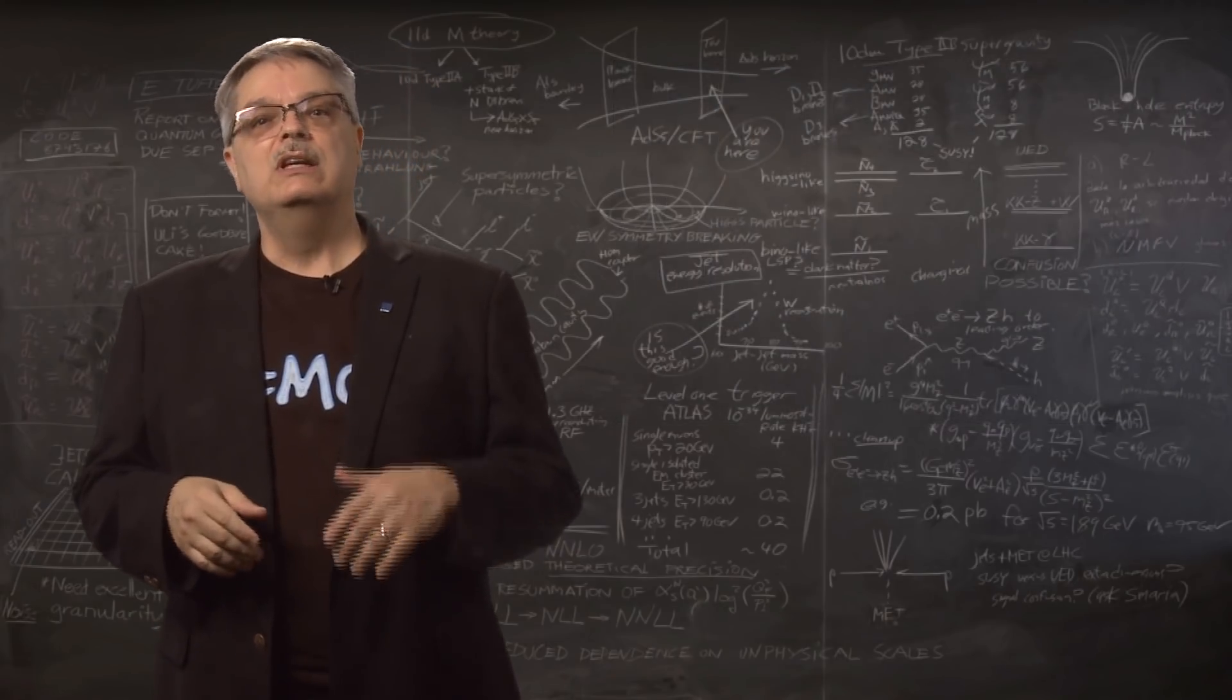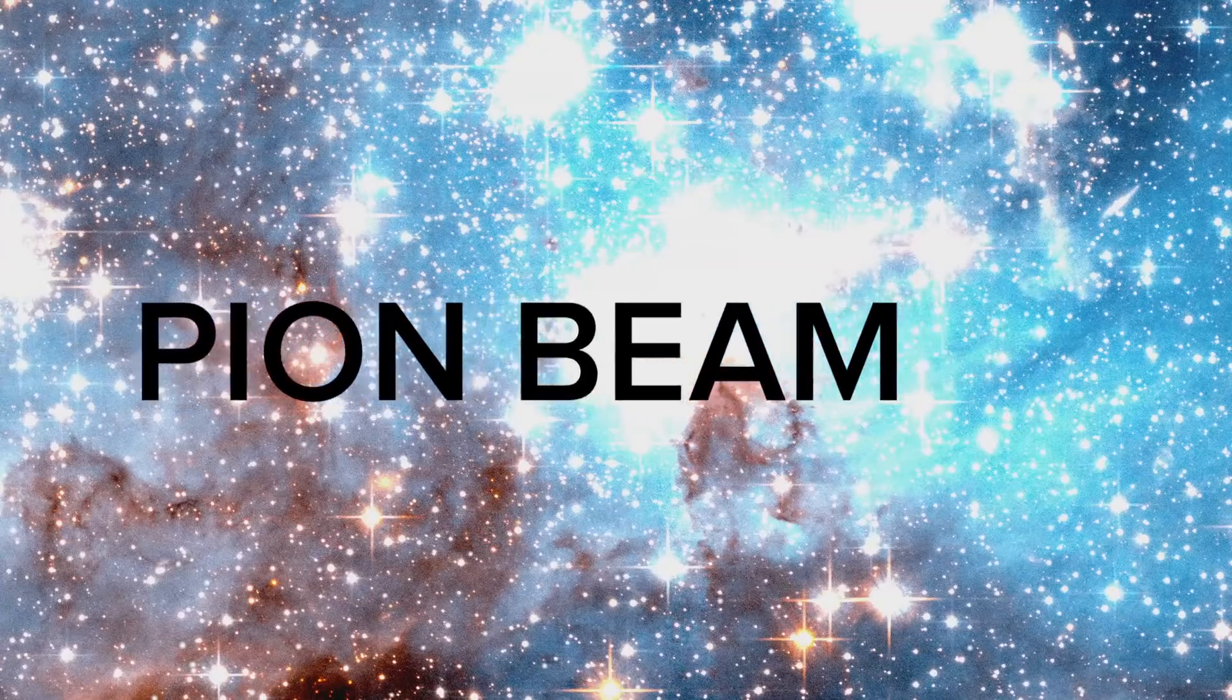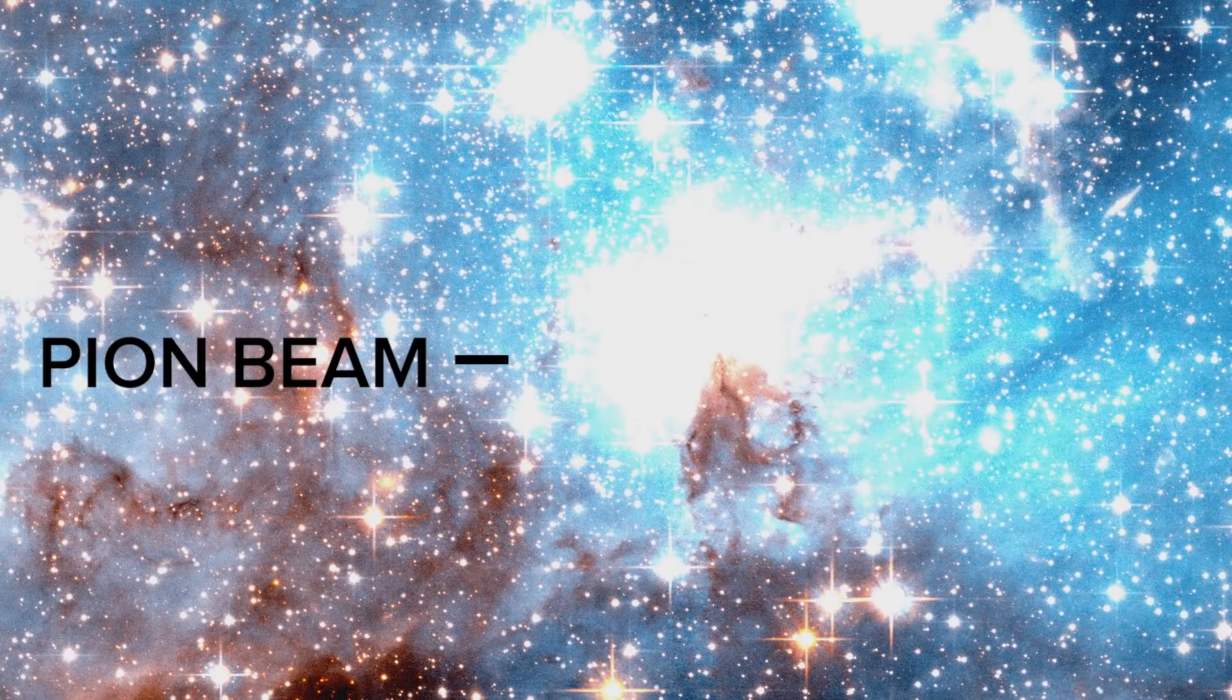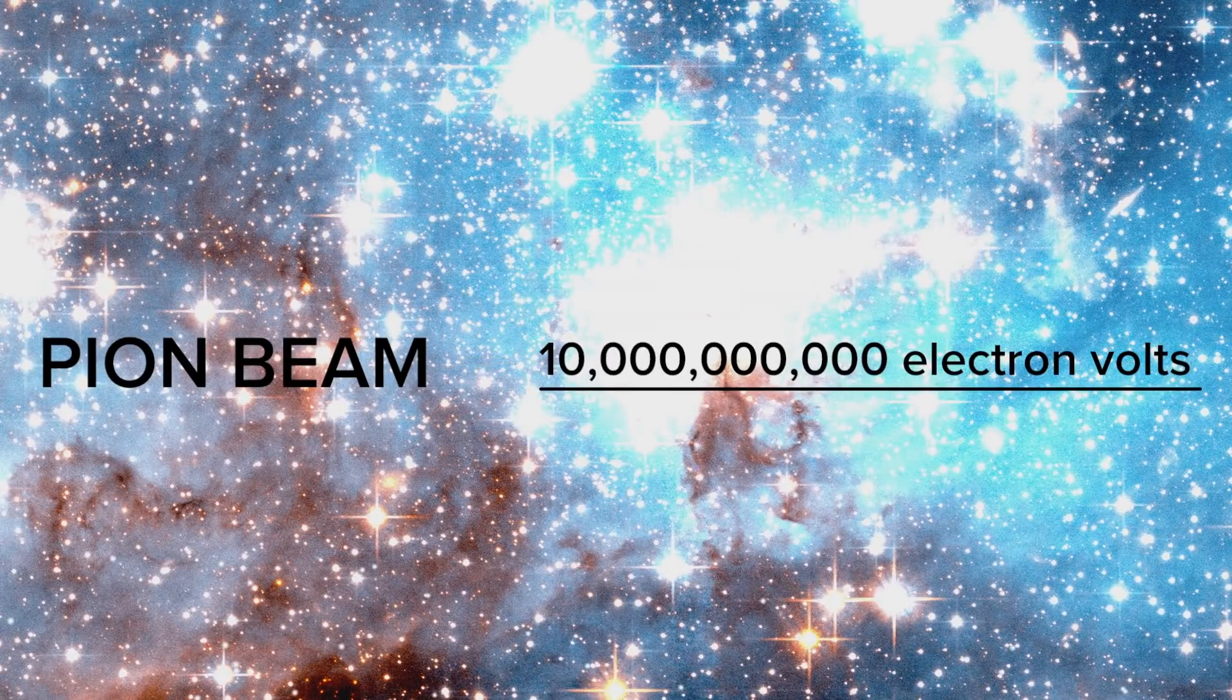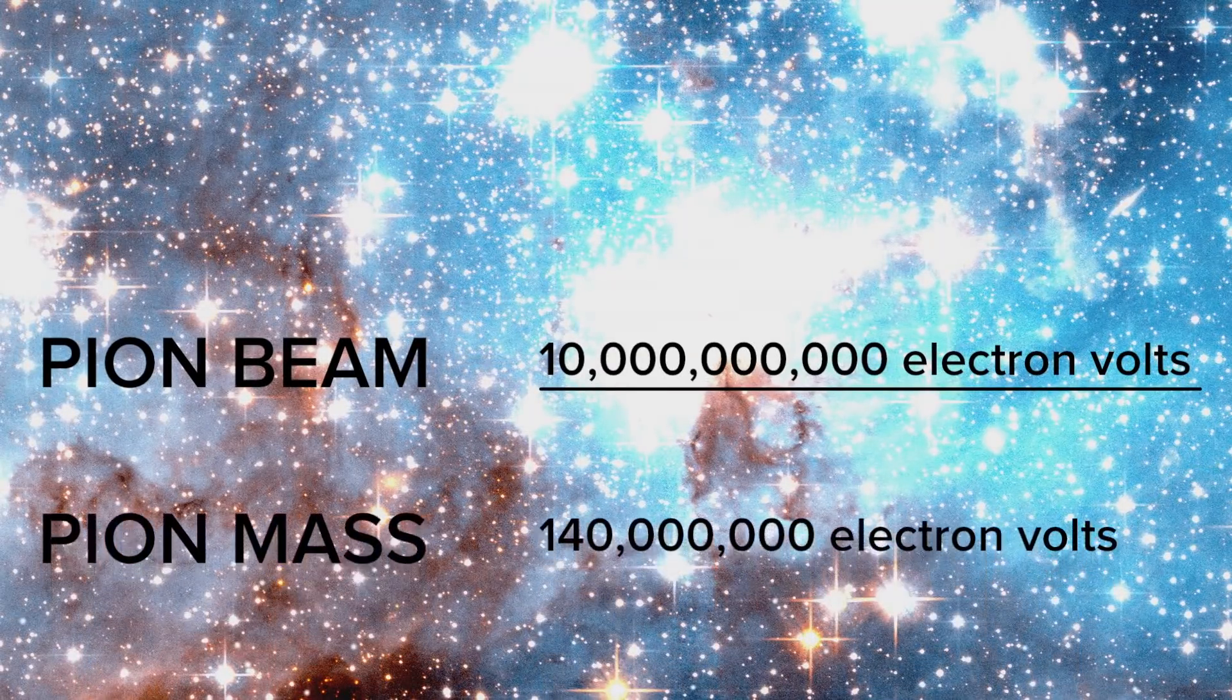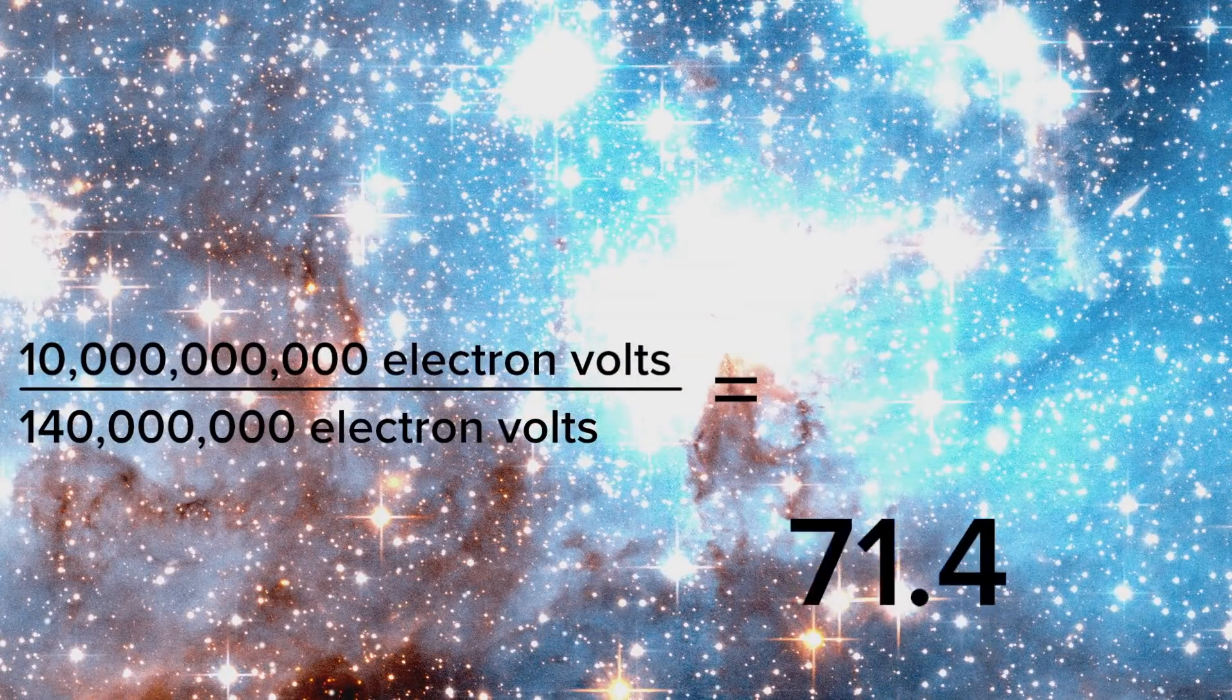It turns out that you can determine the difference in the rates of two clocks by dividing the energy of the beam of pions, which we recall is 10 billion electron volts, by the mass of the pion, which is 0.14 billion electron volts. Do that division and you get 71.4.